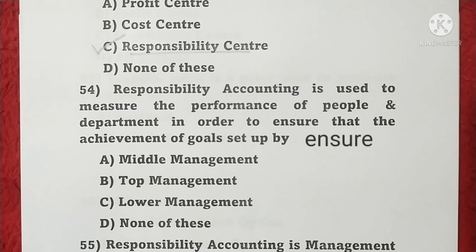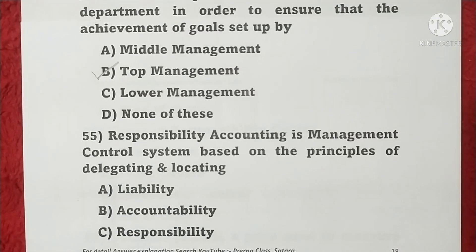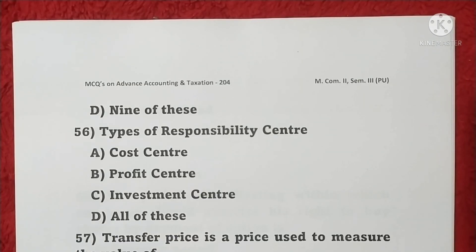Question 54 continued: in order to measure the achievement of goals set up by top management, option B is correct. Question 55: Responsibility accounting is a management control system based on the principles of delegating and locating responsibility — option C is correct. Question 56: Types of responsibility centers are cost center, profit center, investment center, and all of these — option D is correct.